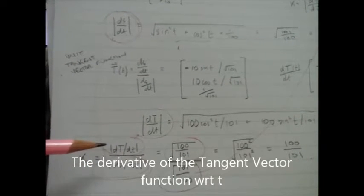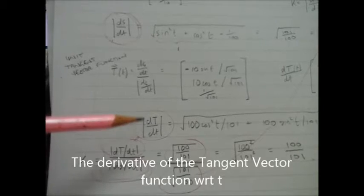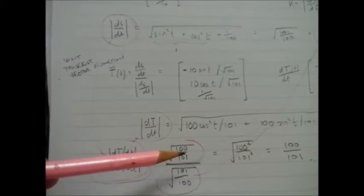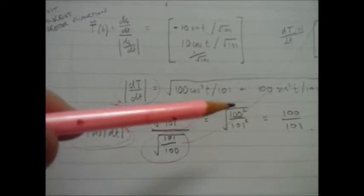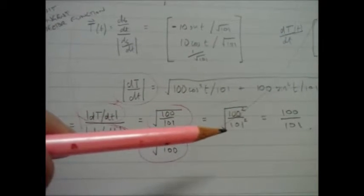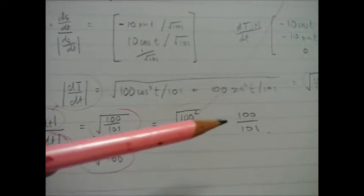On the top bit, dT/dt, the tangent vector function, the magnitude of it comes from here, which I just worked out there. I've got these numbers: 100 divided by 101, all rooted, 101 divided by 100, all rooted. It's a bit confusing, but if you work all that out, you'll end up at the square root of 100² over 101².